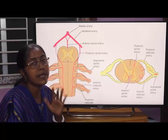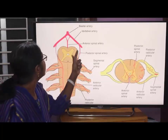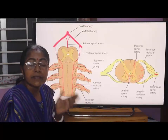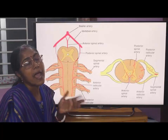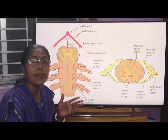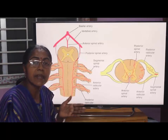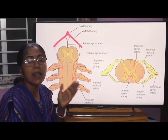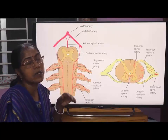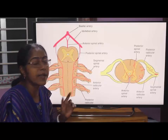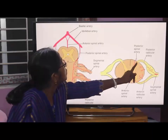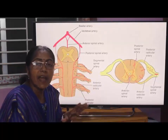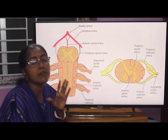Now, the posterior spinal artery. They are two in number. Each artery arises from the vertebral arteries within the skull, or they may arise indirectly from the posterior inferior cerebellar arteries. The two posterior spinal arteries descend downwards on the posterior surface of the spinal cord, close to the dorsal root of the spinal cord, and divide into a number of small branches.